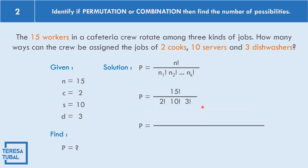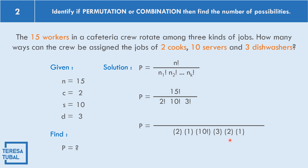We expand only 2 factorial and 3 factorial. The factored form of 2 factorial is two times one; 3 factorial is three times two times one. We expand 15 factorial stopping at 10 factorial: fifteen times fourteen times thirteen times twelve times eleven times ten factorial, then cancel ten factorial.